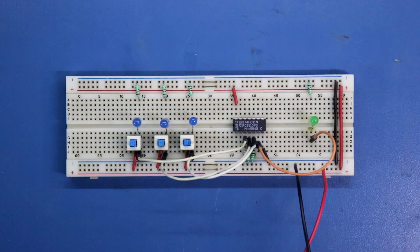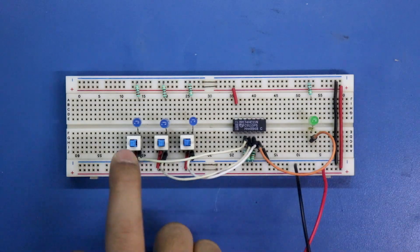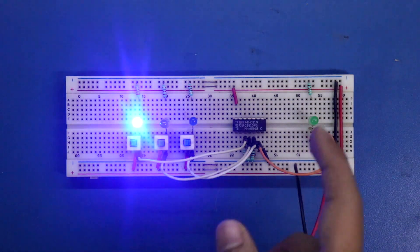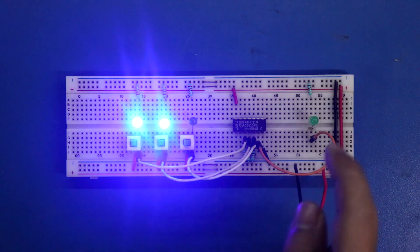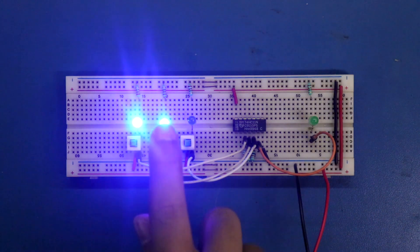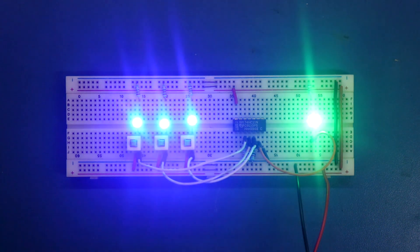As we know, if all the inputs are 1, then only we will get 1 as output. One input is 1, we are getting 0. Again we are getting 0. We will get 1 if all the inputs are 1. So this is the 3-input AND gate, so let's get started.